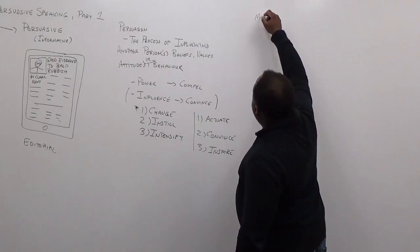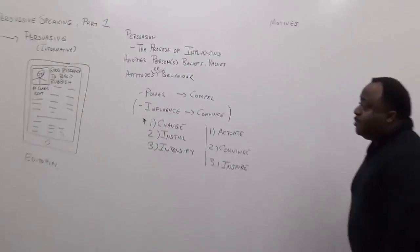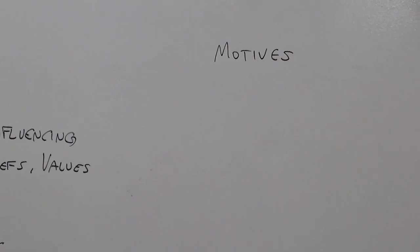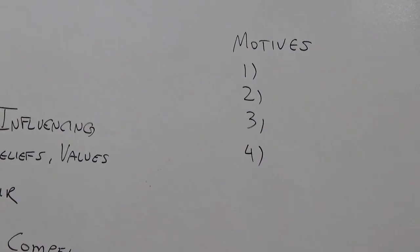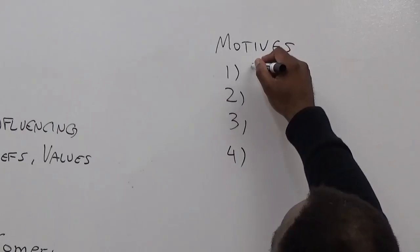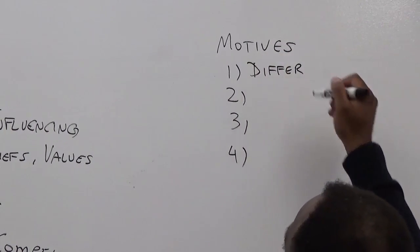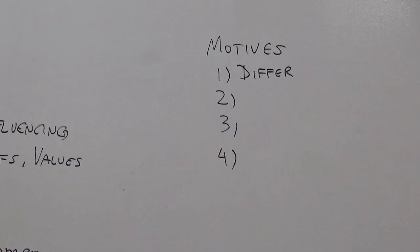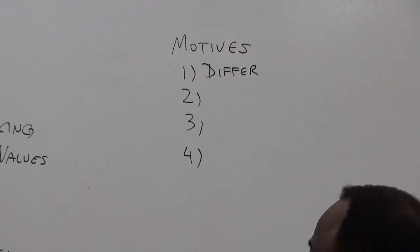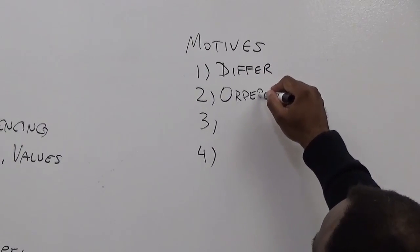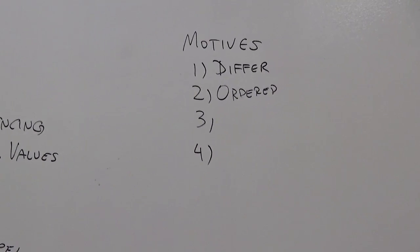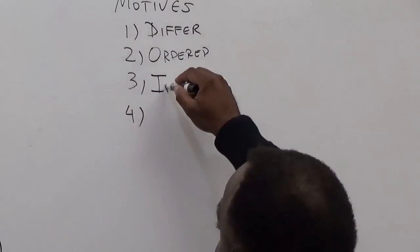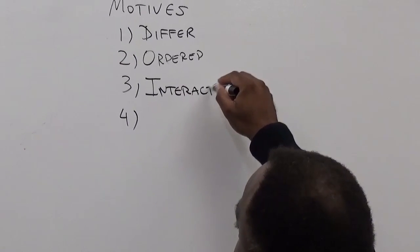Where it gets a little tricky sometimes is motives. In order for our persuasion message to work, we need to understand why people do the things that they do — those are their motives. With motives, there are four things you need to know. Number one, our motives differ. What's important to us today may not necessarily be what's important to us a few minutes from now. They're also ordered — we have several things going on, but some things at any given moment are more important than others.